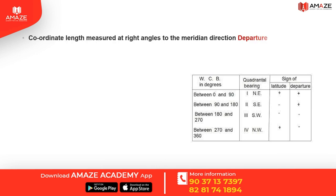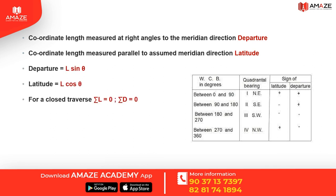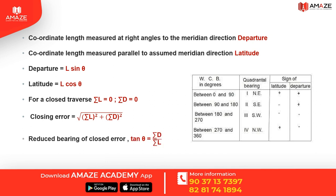The component of a survey line perpendicular to the meridian direction is called departure, and the component parallel to the meridian is called latitude. Departure is L sin theta and latitude is L cos theta. For a closed traverse, sigma L equals 0 and sigma D equals 0 — sum of latitudes and sum of departures are both zero. If the first and last points don't meet exactly, there is a closing error. Closing error equals square root of (sum of latitudes squared plus sum of departures squared). The reduced bearing of the closing error: tan theta equals sigma D by sigma L. Relative error of closure equals closing error divided by the perimeter of the traverse. In quadrant sign convention: first quadrant — latitude positive, departure positive; second quadrant — latitude negative, departure positive; third quadrant — both negative; fourth quadrant — latitude positive, departure negative.